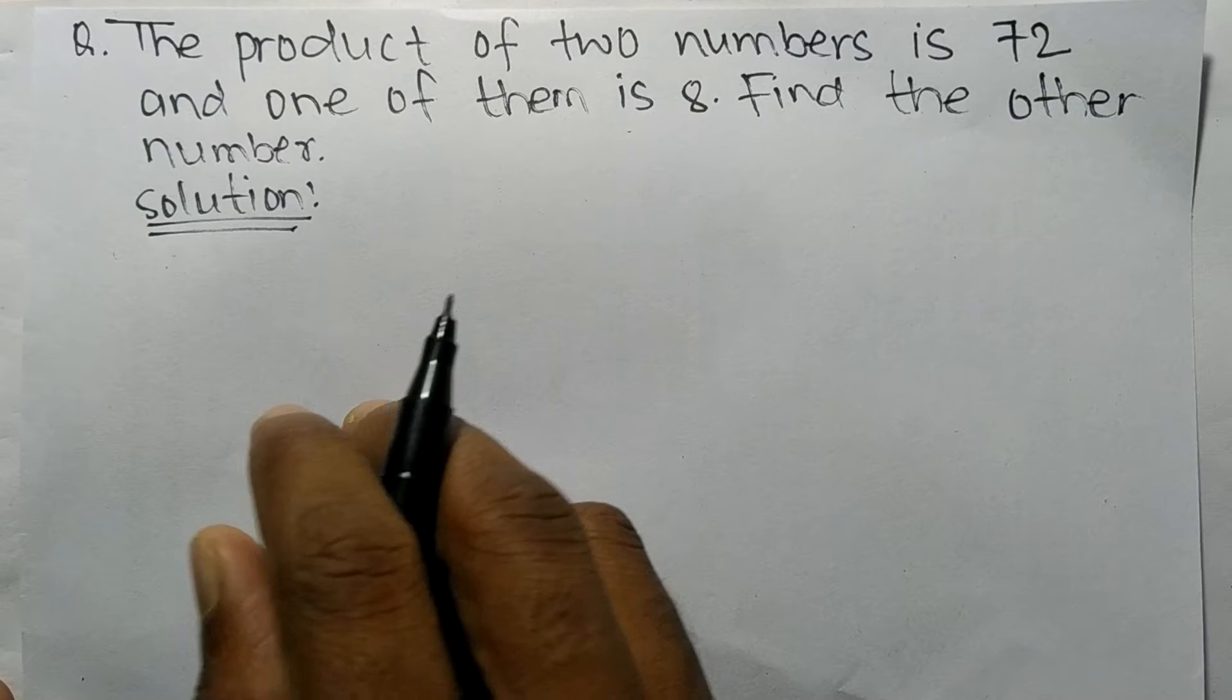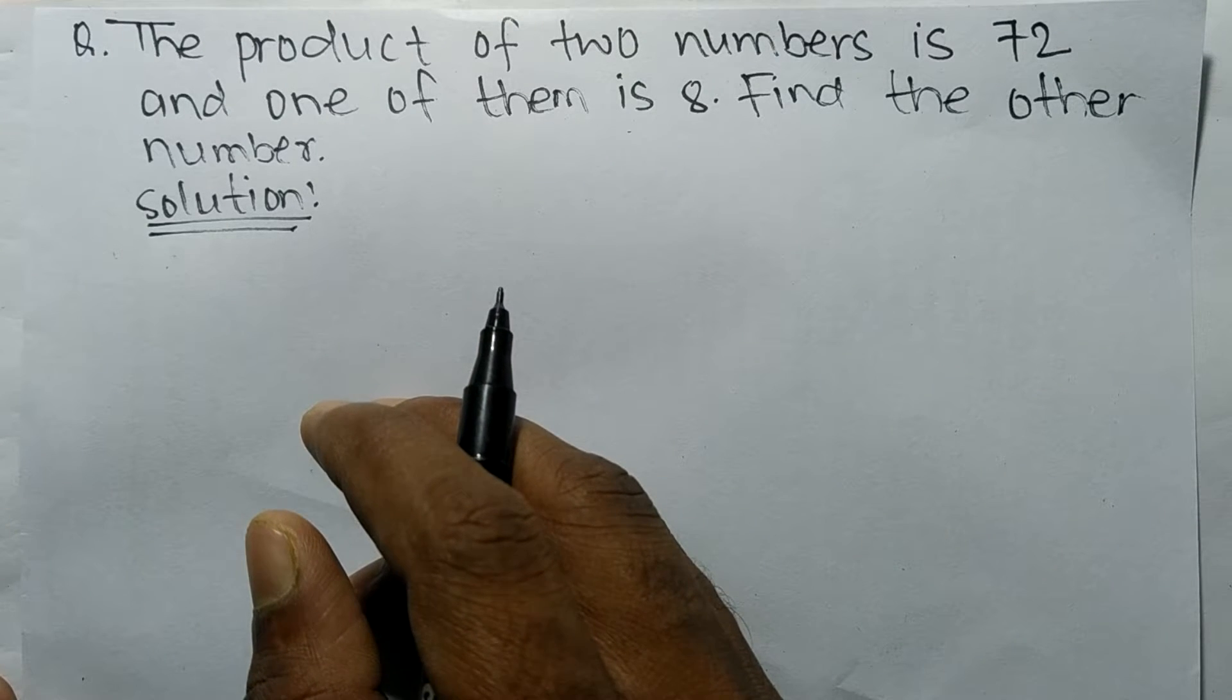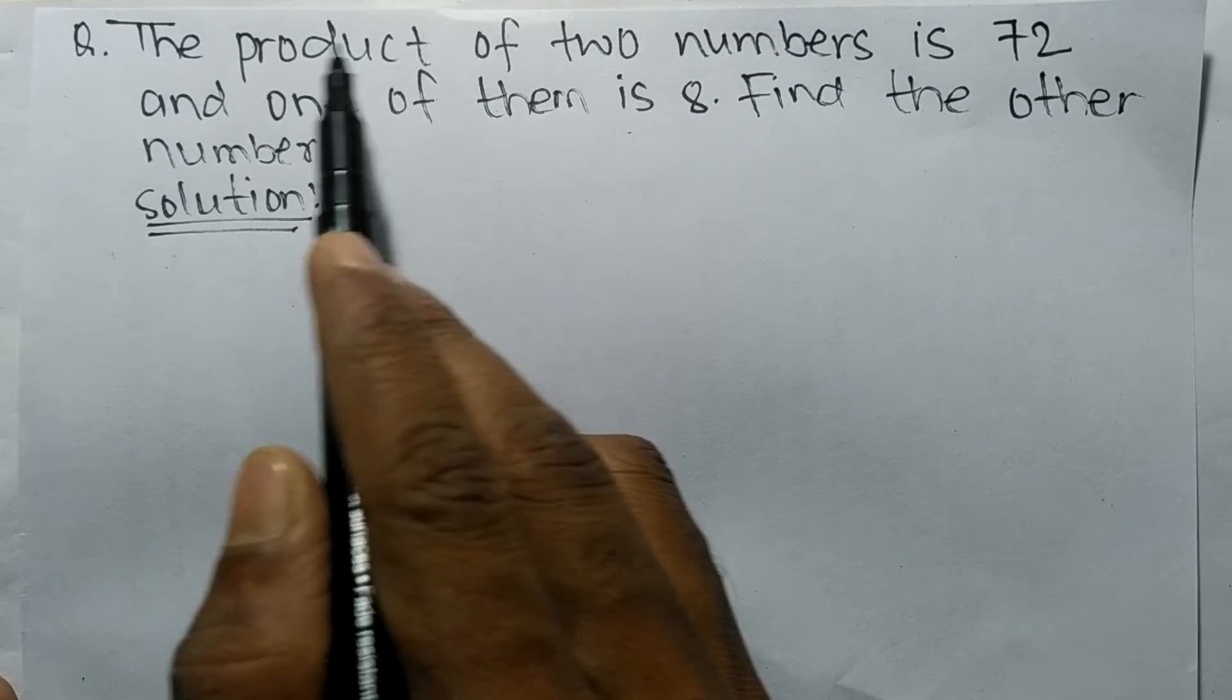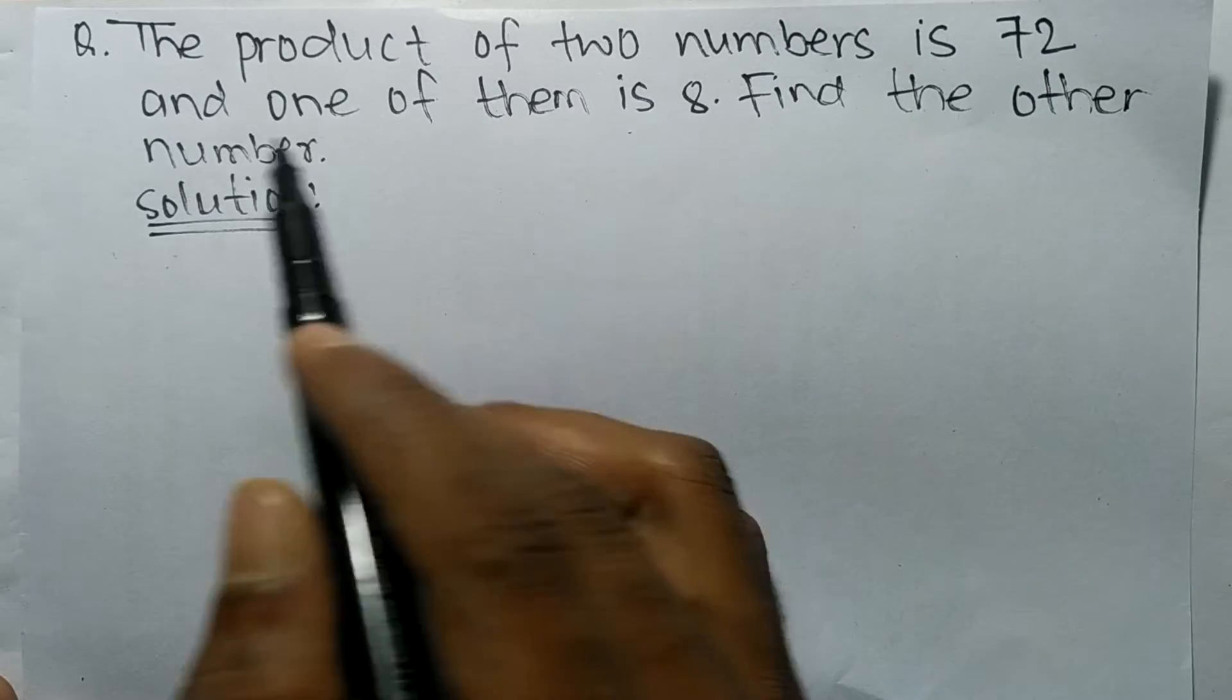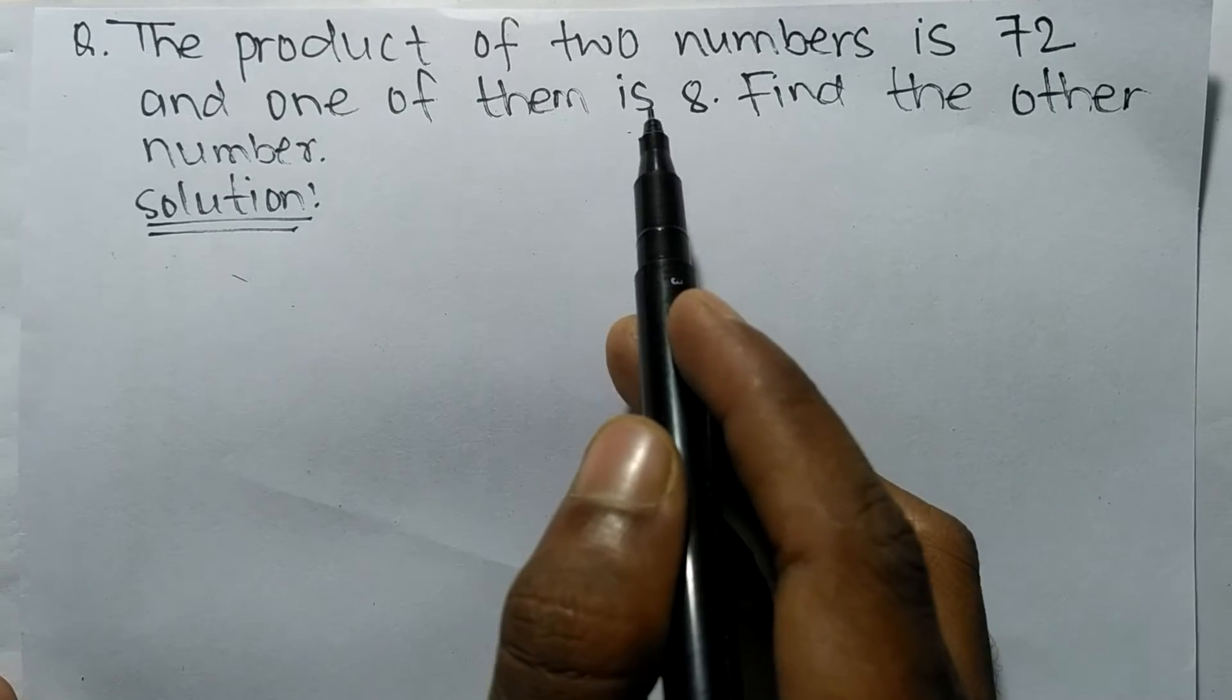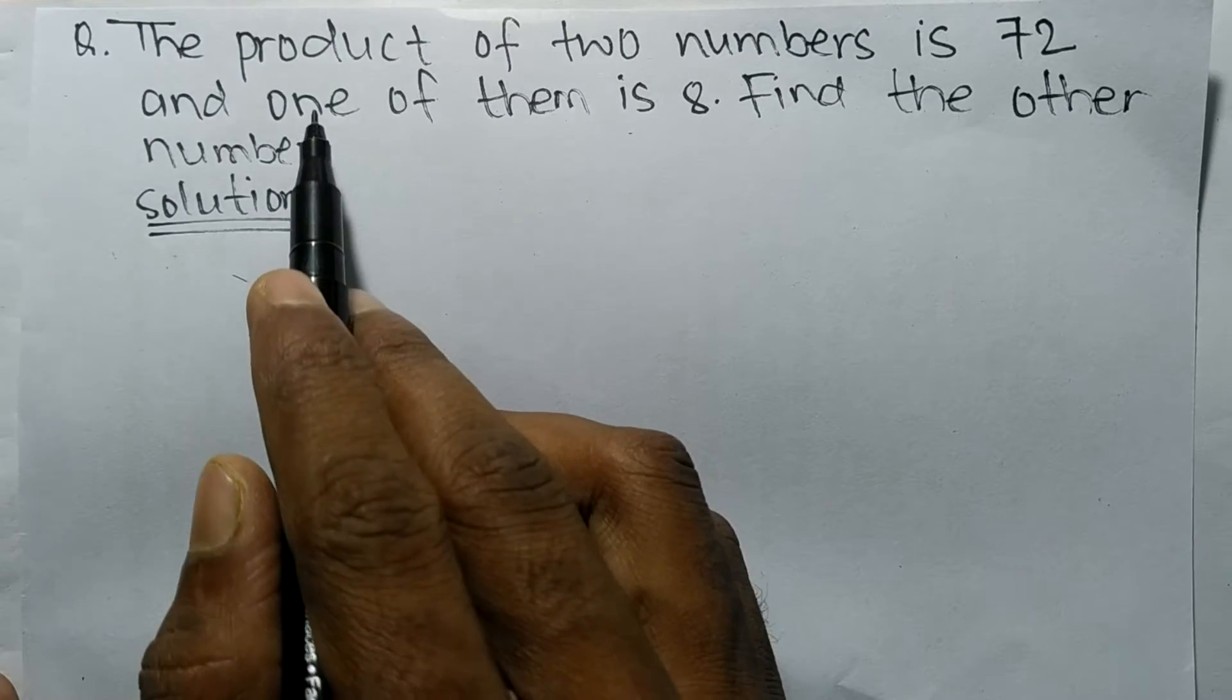Today in this video we are going to solve an algebraic equation expressed in word form. The question is: the product of two numbers is 72 and one of them is 8, find the other number.